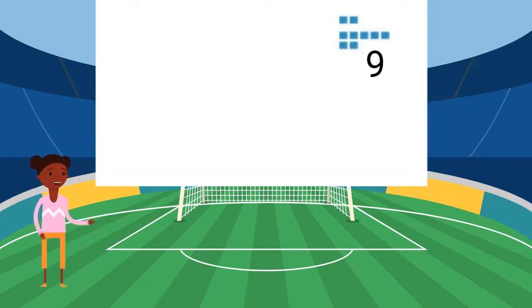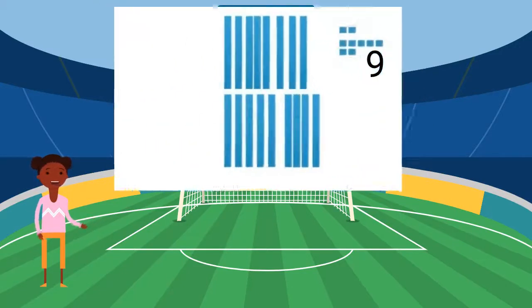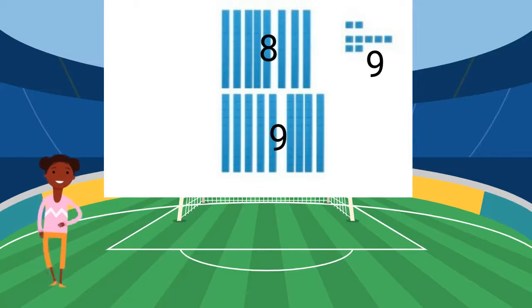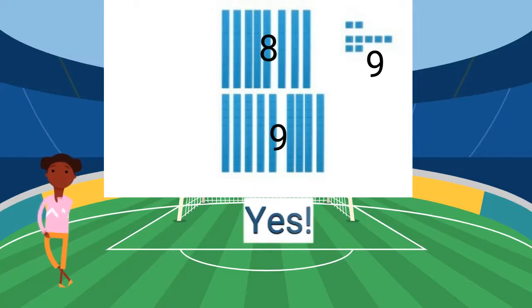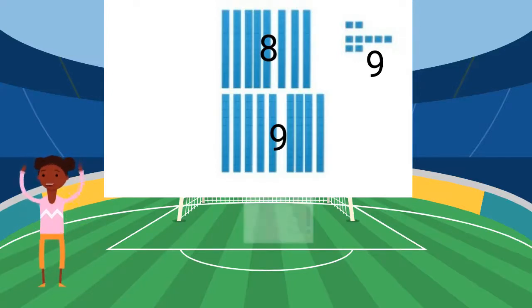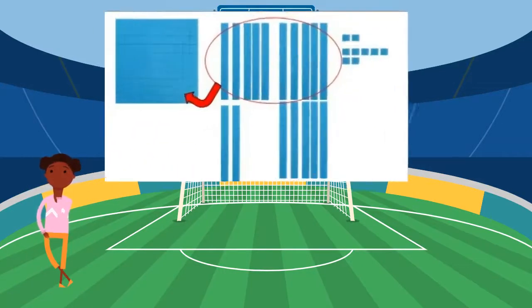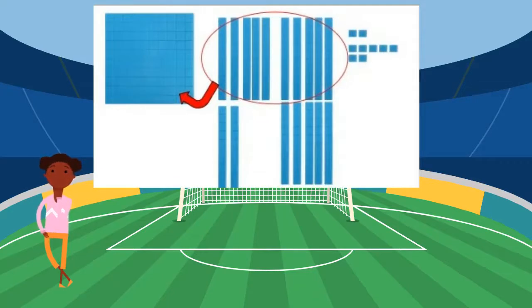Now I will combine my tens. I have eight tens and nine tens. Will I need to regroup? Yes, I have too many groups of tens. Can I make a group of ten ten-rods and exchange it for a hundred flat? Yes, I will regroup ten of my ten rods for a 100 flat.